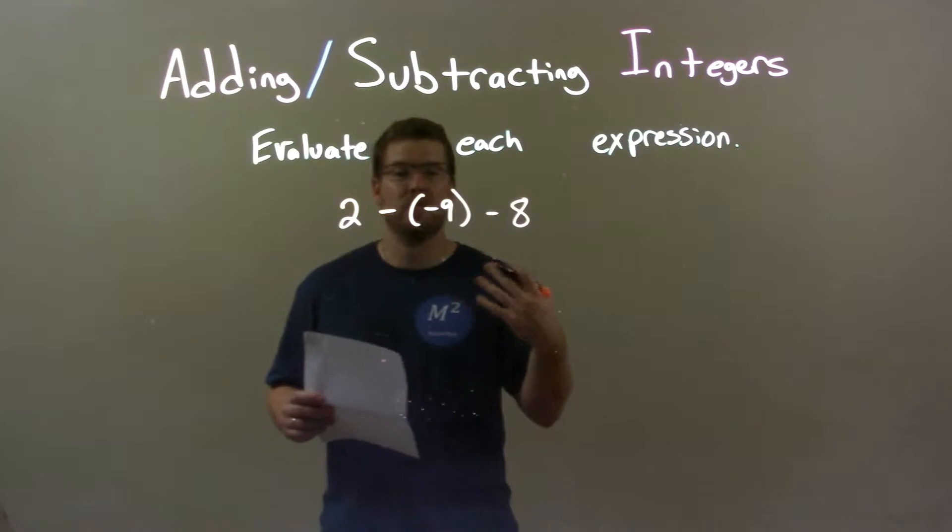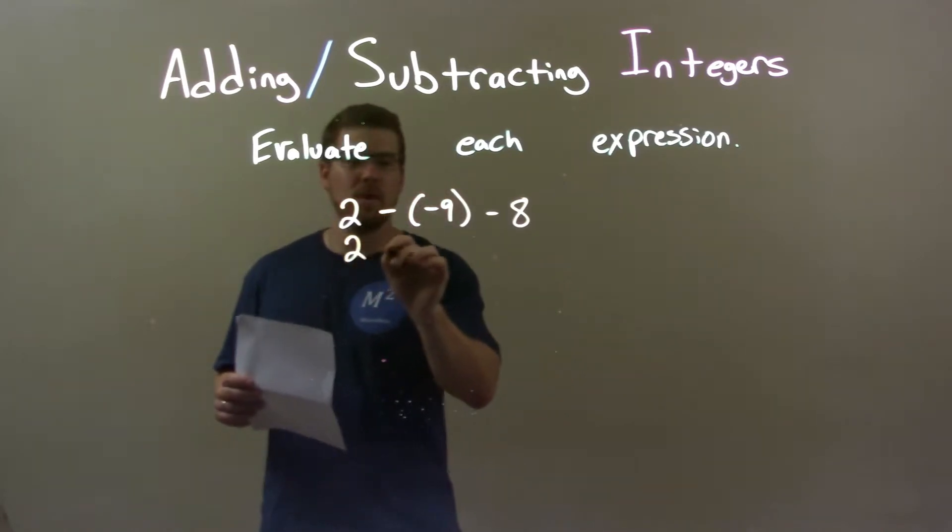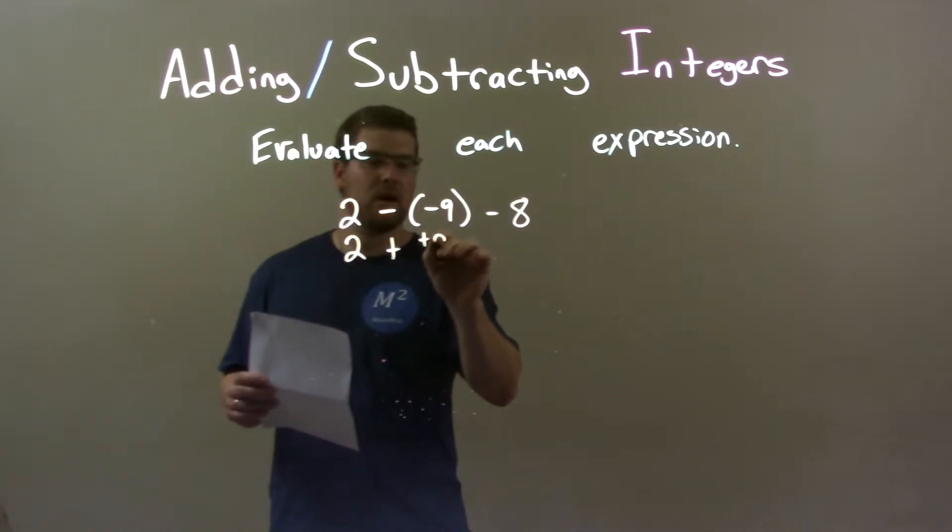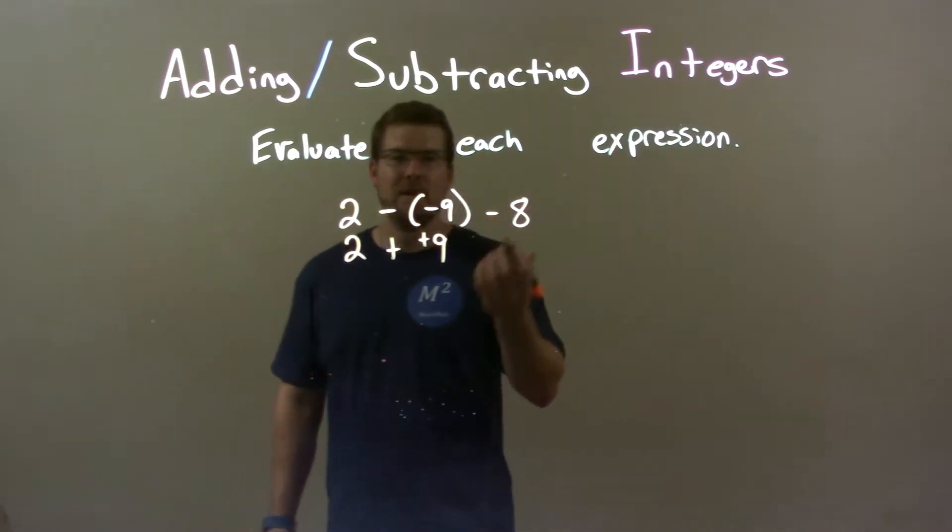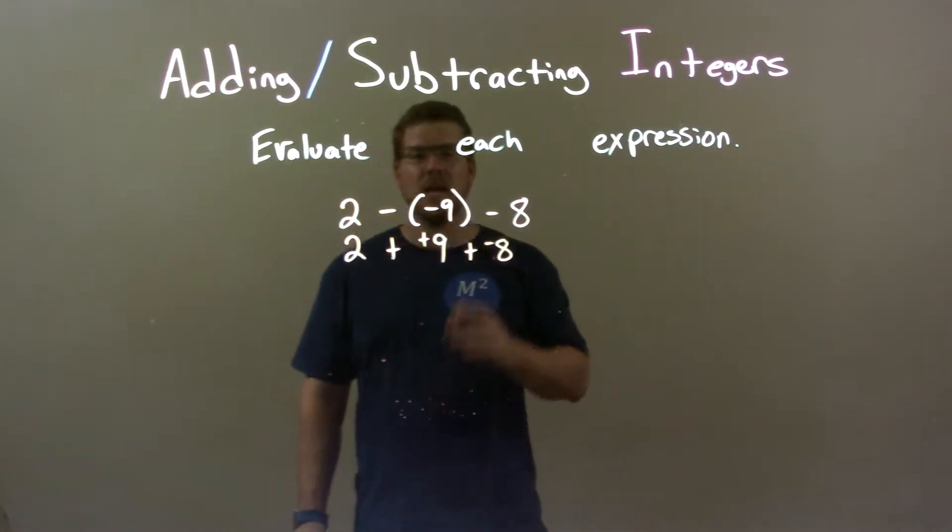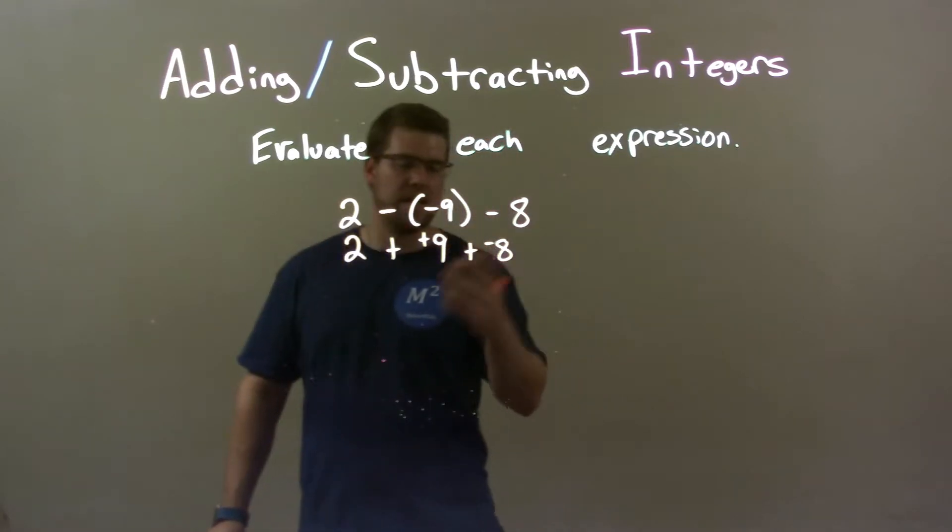So minus a negative 9 is the same thing as adding a positive 9. So we have 2 plus 9. And then this minus 8, I'll make it plus a negative 8. Now we know that's the same thing as minus 8, but plus a negative.